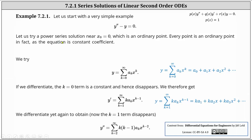Because we're centering the power series at x equals zero, we try y equals a sum from k equals zero to infinity of a sub k times x to the power of k. Now we need to work on determining y double prime. We first need to find y prime, so we differentiate. Notice when k equals zero in the original power series, we have the constant a sub zero, whose derivative is equal to zero, and therefore y prime is equal to the sum from k equals one to infinity of k times a sub k times x to the power of k minus one.